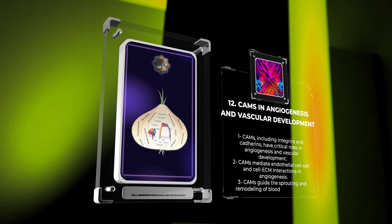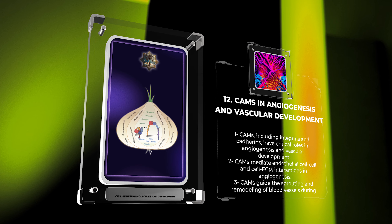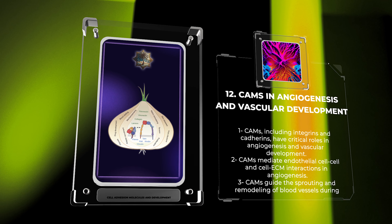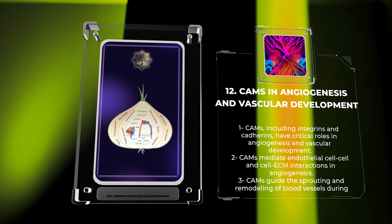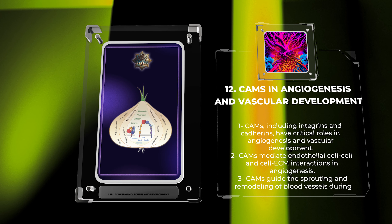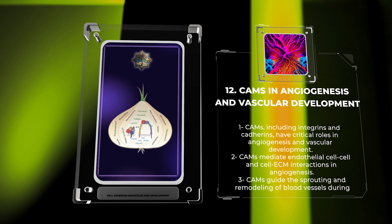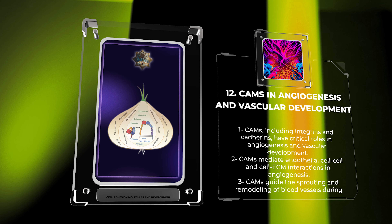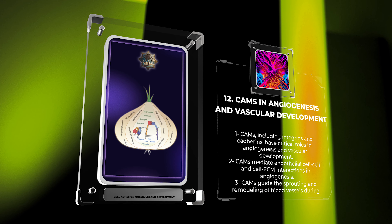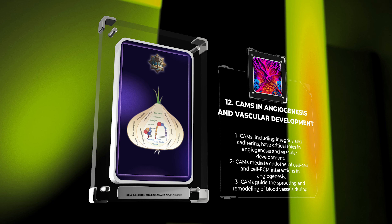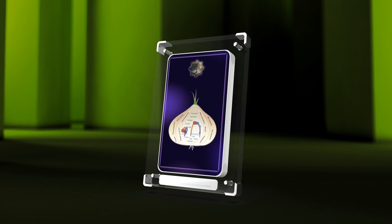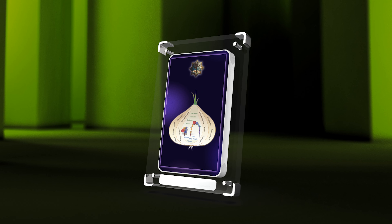Angiogenesis is the process of new blood vessel formation, essential for tissue growth, wound healing, and physiological adaptation. CAMs, including integrins and cadherins, have critical roles in angiogenesis and vascular development. These adhesion molecules mediate endothelial cell-cell and cell-ECM interactions, guiding the sprouting and remodeling of blood vessels during embryogenesis and throughout adult life.